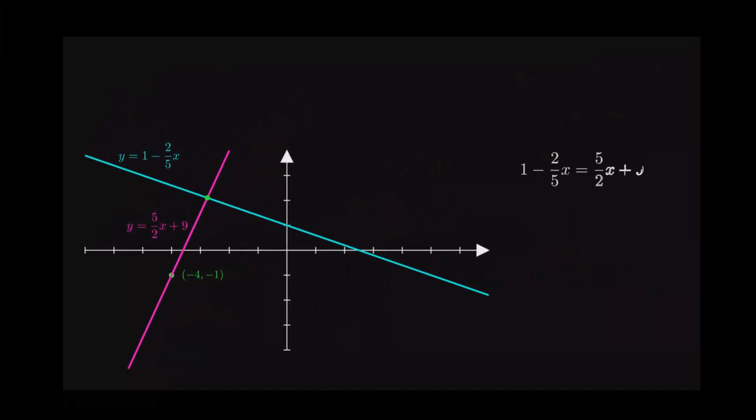So the two lines are set equal to each other there. We're going to solve this for x. Okay, again, go through the algebra to sharpen up your algebra skills, and hopefully you match this.